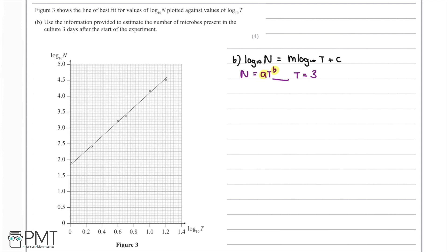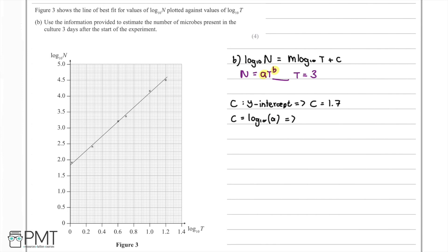Recalling the equation log₁₀(n) equals m·log₁₀(t) plus c, we know that c is the y-intercept, which we can read off the graph. Looking closely at the graph, c is approximately 1.7. Since c equals log₁₀(a), we can find a by computing 10 to the power of 1.7, which equals 50.12. Therefore a equals 50.12.